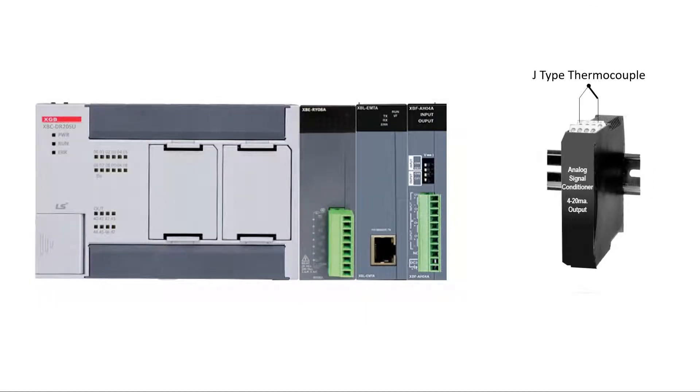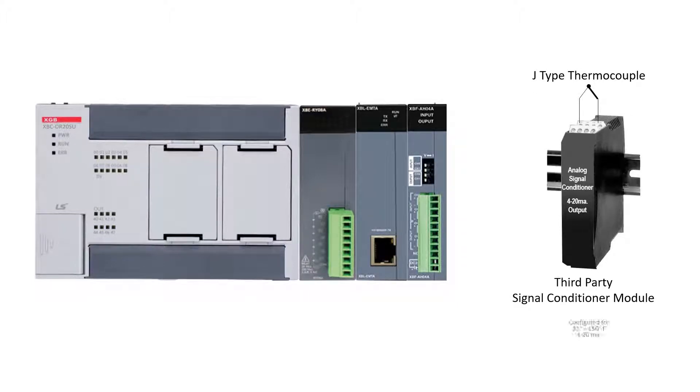The J-type thermocouple is connected to a third party signal conditioner. The signal conditioner is configured for a full scale span of 32 to 150 degrees Fahrenheit. A 4 to 20 milliamp analog signal is sent to channel 0 of the PLC analog input module.